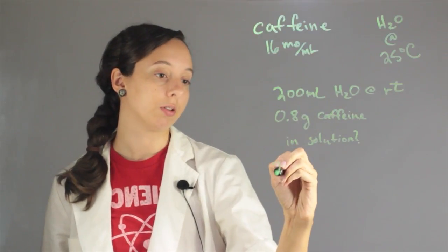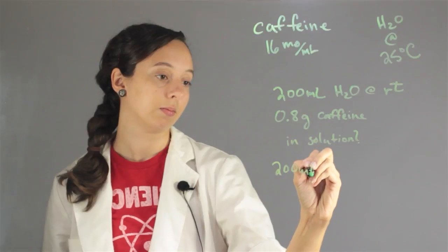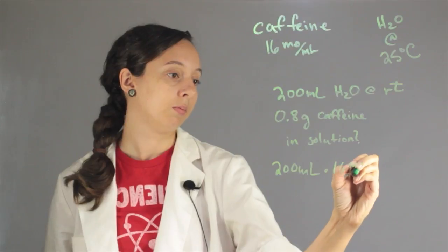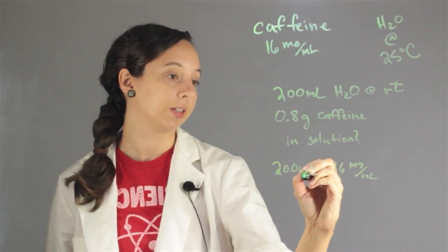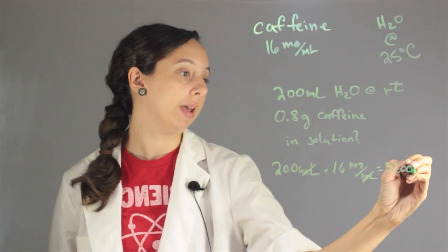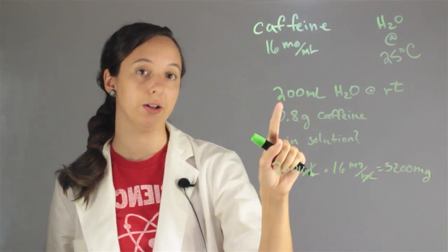So if we have 200 mils of water times 16 mg per mil, units cancel out, so we're left with 3200 mgs that can possibly fit into our 200 mils.